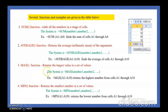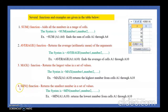Next is the MAX function. It returns the largest value in a set of values. You type equal to MAX, then bracket, then the range such as A1:A10. After that is the MIN function, which returns the smallest number in a range. You type equal to MIN, then bracket, then the starting cell address to the last cell address, for example A1:A10, and it will display the smallest value. Let us do it practically.